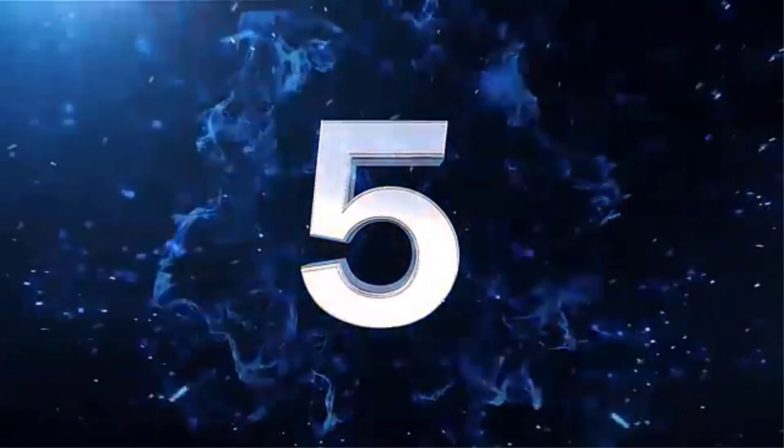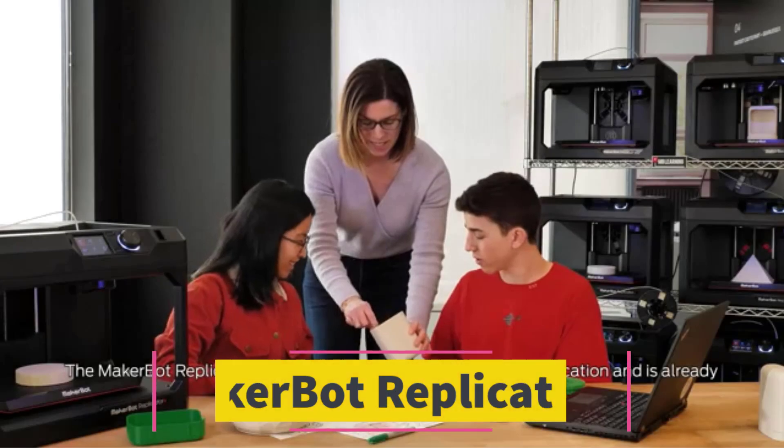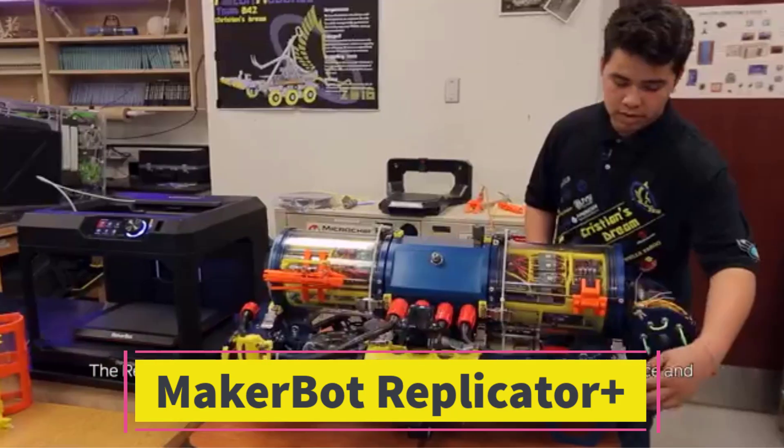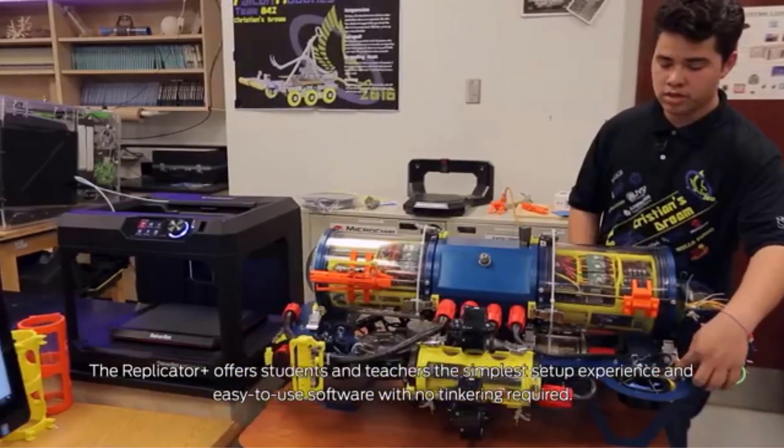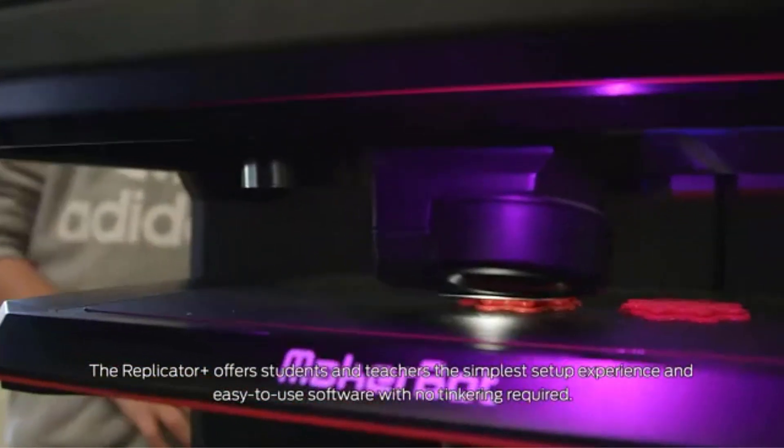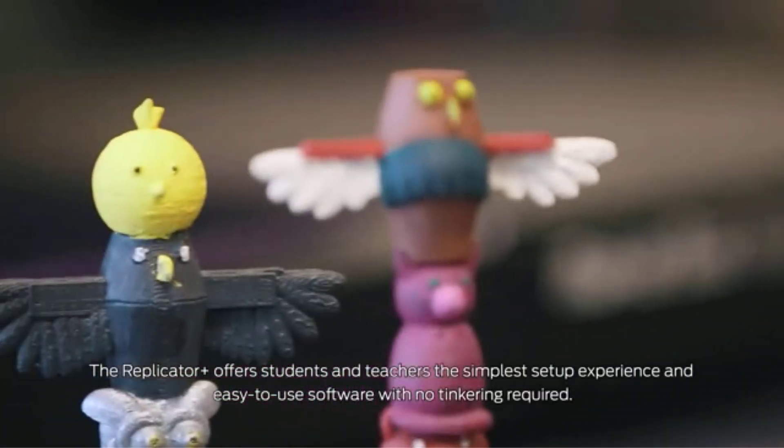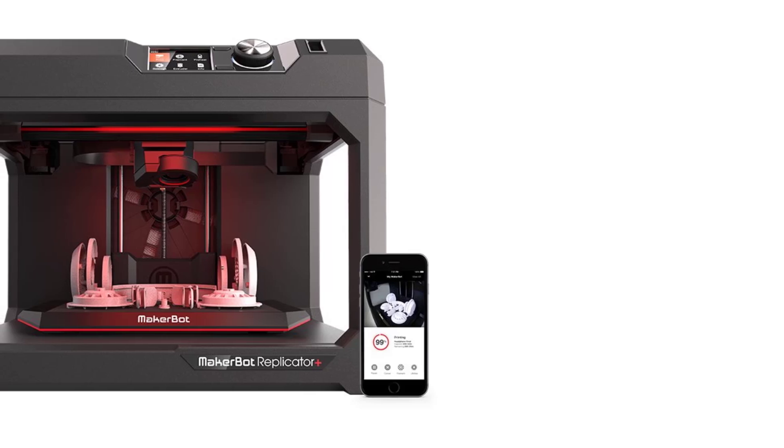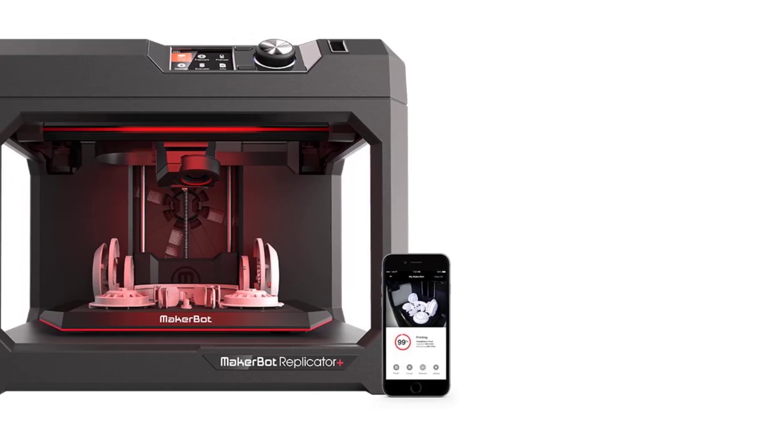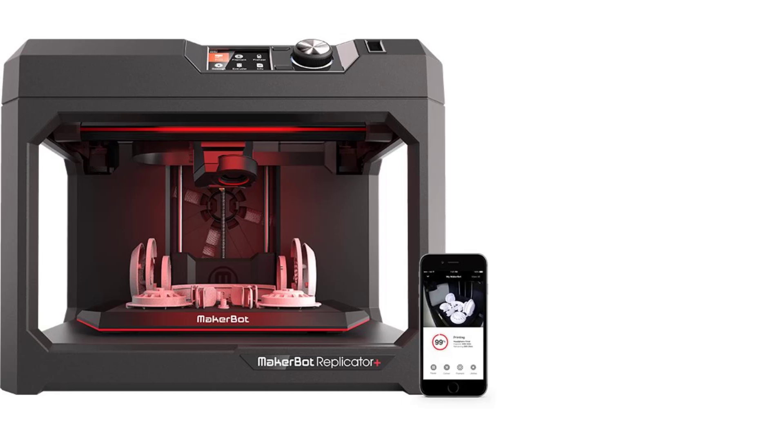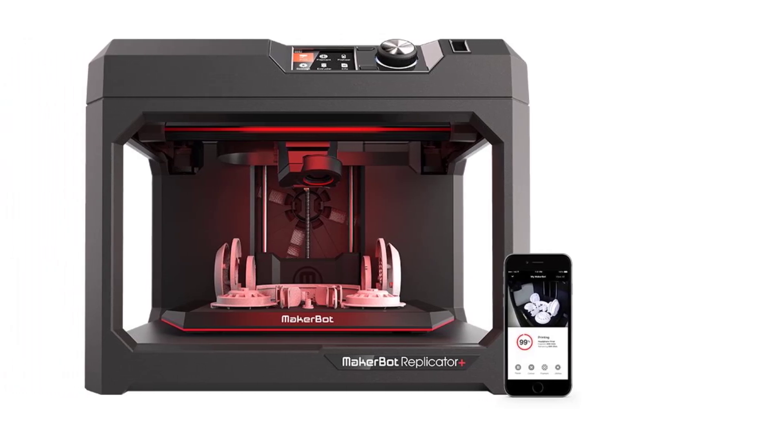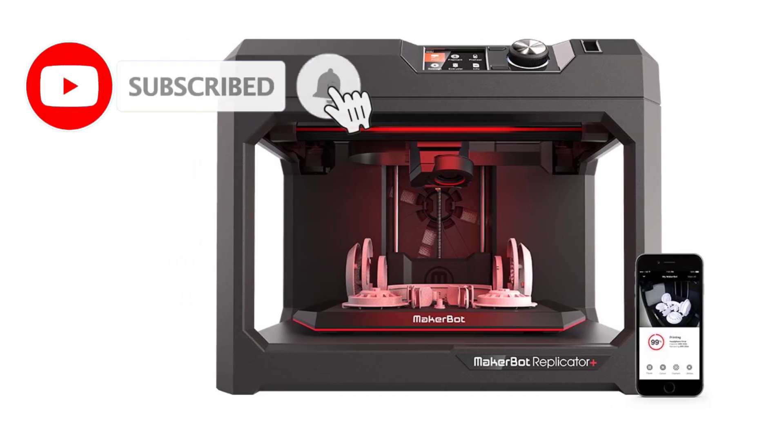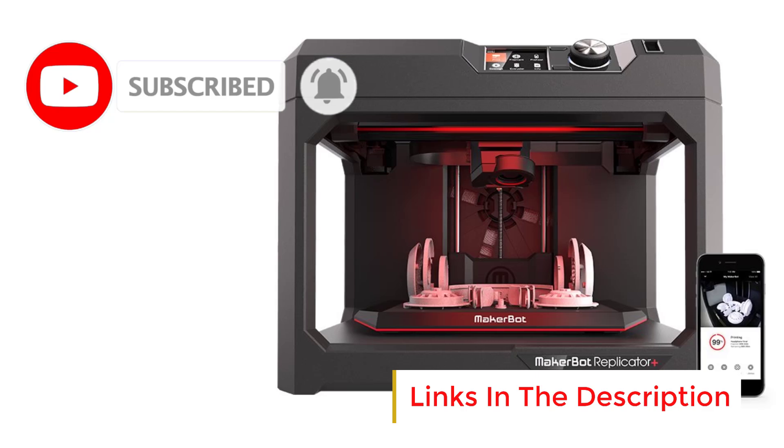Number 5. MakerBot Replicator Plus. The MakerBot Replicator Plus is a desktop 3D printer designed for fast, reliable, and high-quality PLA printing. It is well-suited for home, school, and professional environments, offering easy setup, a user-friendly interface, and improved performance over its predecessor. A key feature is the swappable Smart Extruder Plus, which enhances print reliability and reduces downtime. This extruder is optimized for PLA filament, ensuring consistent extrusion and fewer print failures.